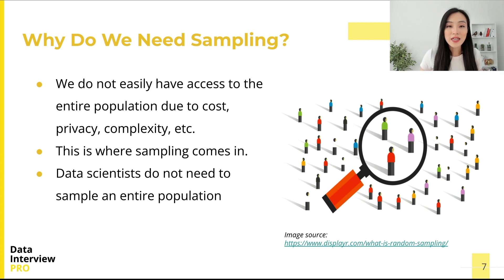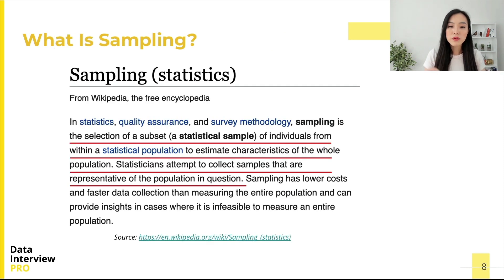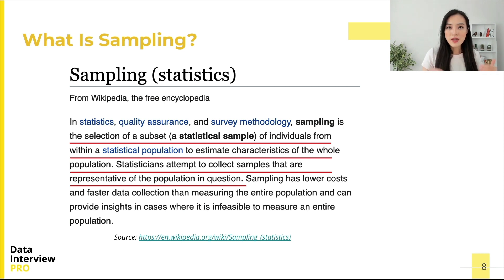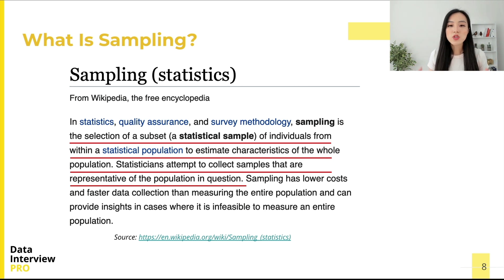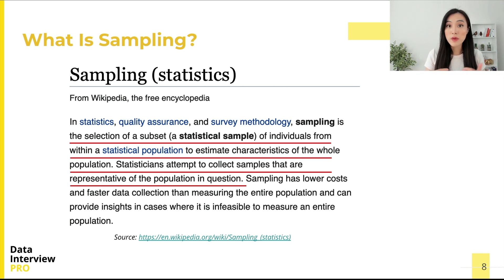So what exactly is sampling? Wikipedia puts it this way: sampling is the selection of a subset of individuals from within a population to estimate characteristics of the whole population. Statisticians attempt to collect samples that are representative of the population in question. So sampling allows us to make inferences about the population based on a much smaller subset of the population, which we call a sample. Sampling enables the selection of the right sample from within the larger data set to estimate attributes of the population.